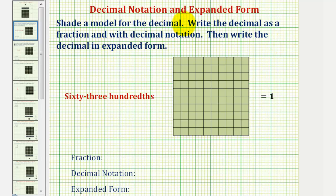In this example, we want to shade a model for the decimal 63 hundredths, then write the decimal as a fraction and with decimal notation, then write the decimal in expanded form.